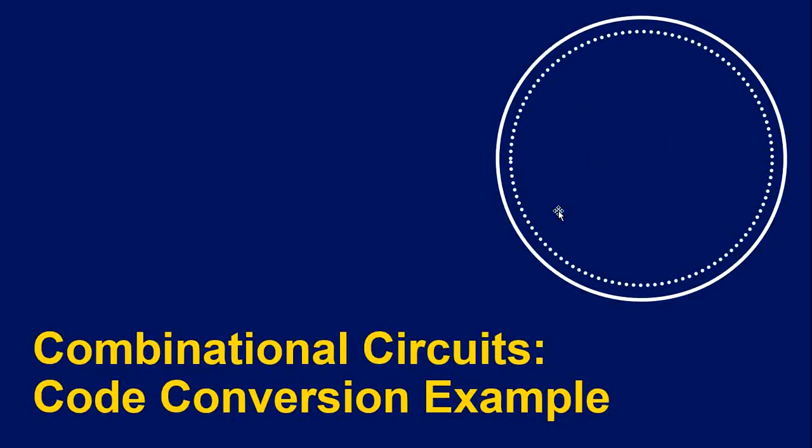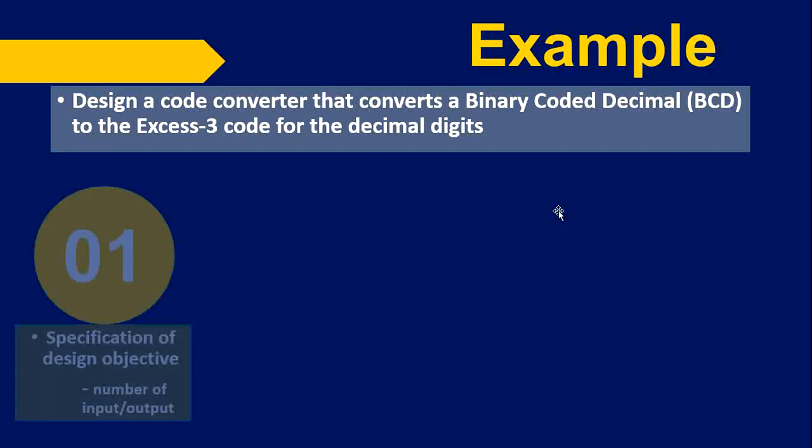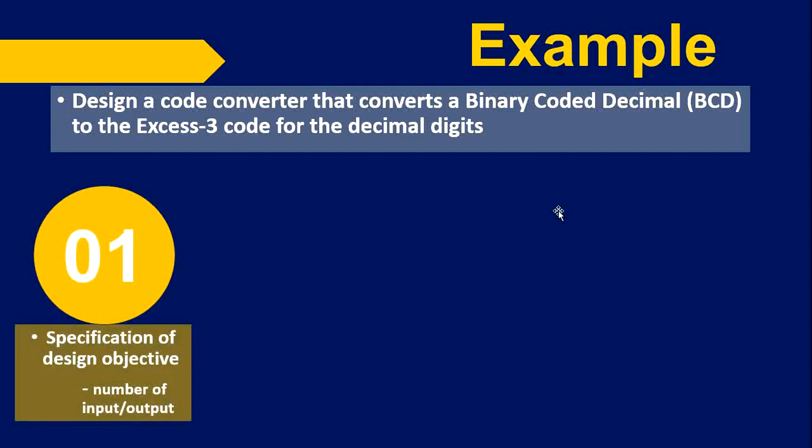Hi guys, welcome to this video on combinational circuits code conversion example. We've learned the design procedure in combinational circuits. Now we will apply it by designing a code converter that converts a Binary Coded Decimal to the Excess-3 code for the decimal digits, applying the procedures in design of combinational circuits. Step one is specification of design object.